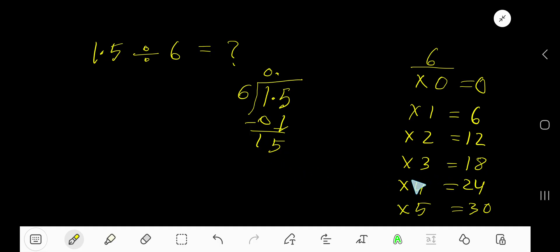2 times 6 is 12, subtract to get 3. To continue this process, since this is a decimal number, we can add any number of zeros. Bring down the first 0. 6 goes into 30 how many times? 5 times.